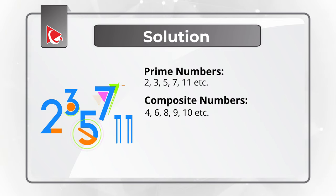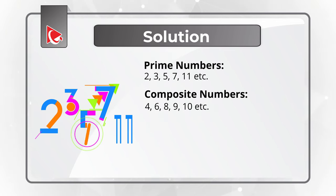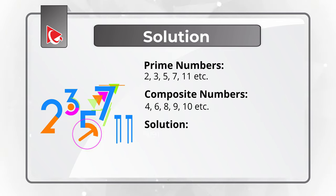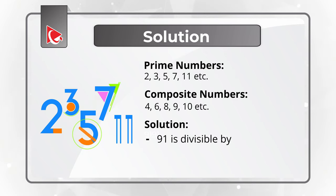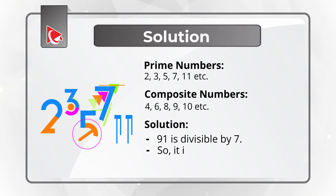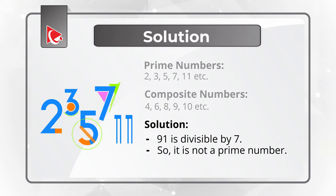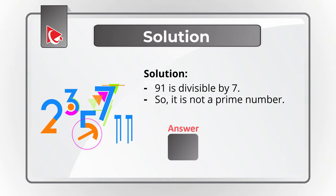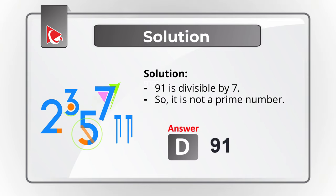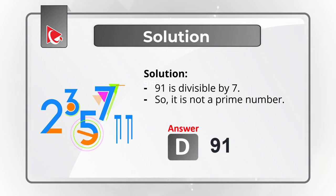As you might have figured out, out of the numbers presented, 91 can be divisible by 7. So 91 is not a prime number, which means the correct solution is choice D, 91. Hopefully you've nailed this question and now know how to answer similar problems on the test.